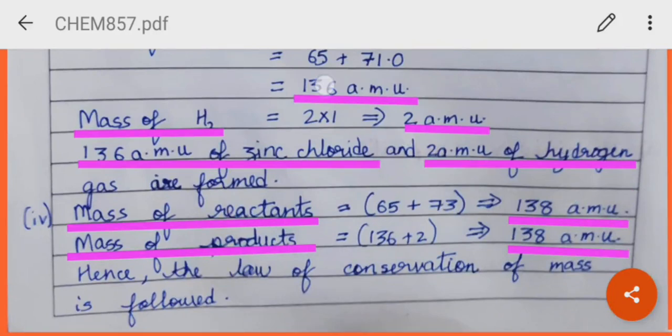And what is the mass of the product? 136 plus 2, 138 atomic mass unit. Hence, the law of conservation of mass is followed. Thank you.